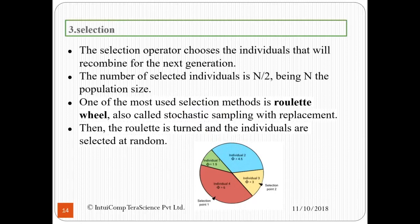Third, we come to the step of selection. Now we must select out of this pie. The selection operator chooses the individuals that will recombine for the next generation. The number of selected individuals is N by 2, N being the population size. One of the most used selection methods is roulette wheel as we discussed below, also called stochastic sampling with replacement, where stochastic means random.